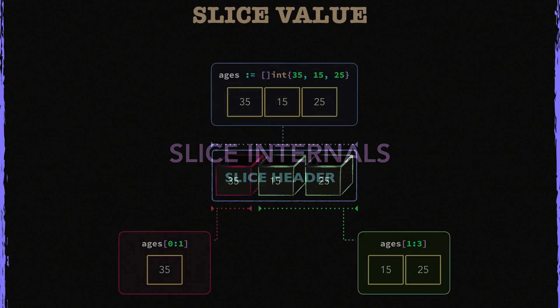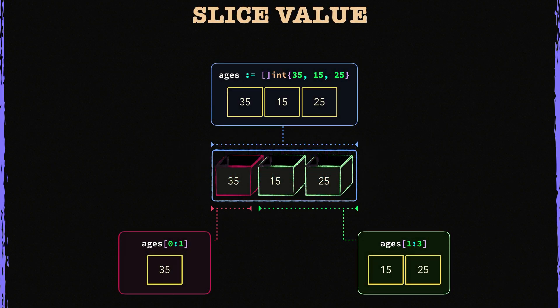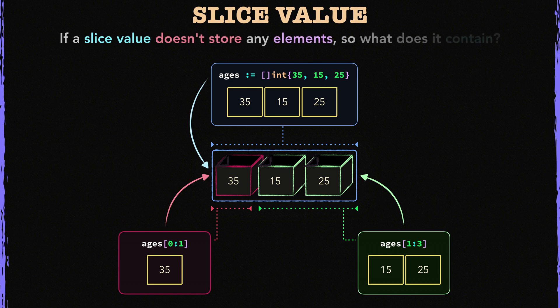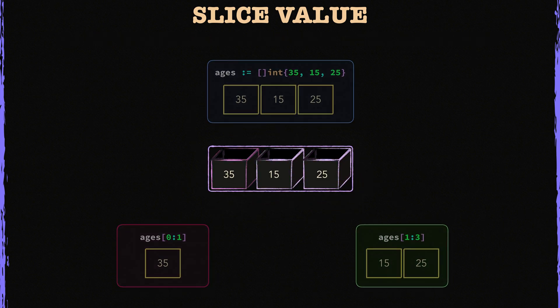Welcome. In this lecture, I'm going to talk about the slice header, so you'll learn what a slice value actually looks like. Let's get back to the first example from the last lecture. As you can see, all these slices refer to the same backing array. If a slice value doesn't contain any elements, what does it contain? How does it find its backing array? Let's see.